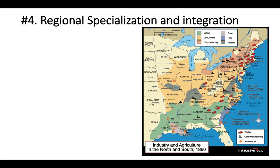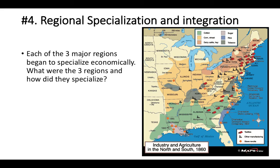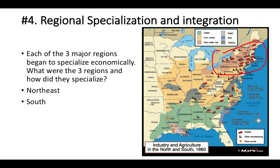Regional specialization — each of the three major regions began to specialize economically. The Northeast begins to turn towards manufacturing and mills and away from farming, although there are still obviously a lot of farms. The South moves from tobacco and indigo to cotton becoming the number one product — overall, it is big and growing cash crops for export or to be used in manufacturing.